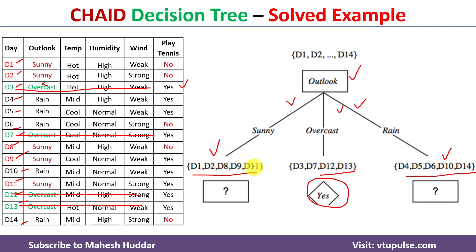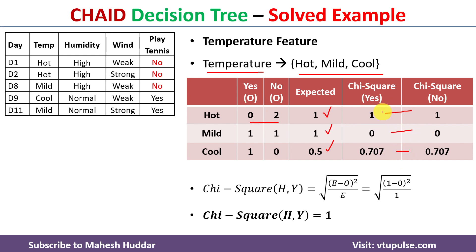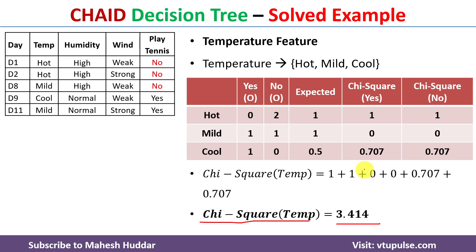For the sunny subset, we consider only the five examples D1, D2, D8, D9, D11 — without the Outlook attribute, using only Temperature, Humidity, and Wind. We calculate chi-square values for each remaining attribute. For Temperature: chi-square = 3.414. For Humidity: chi-square = 4.45.